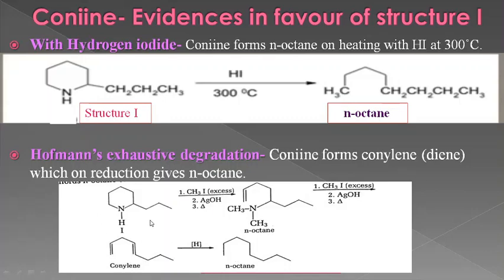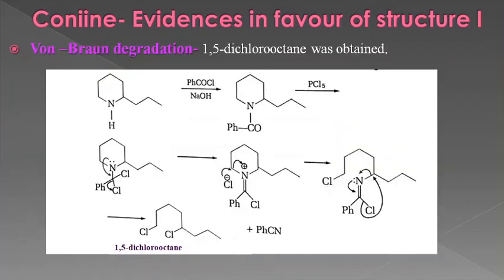If we consider Structure 2, normal octane would not be formed — it would be iso-octane. So the formation of normal octane is in favor of Structure 1.